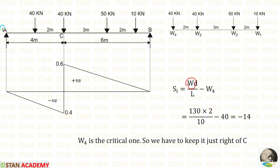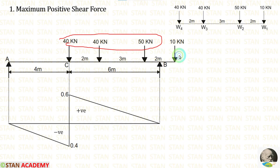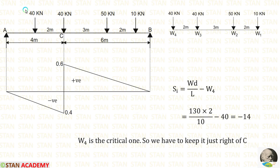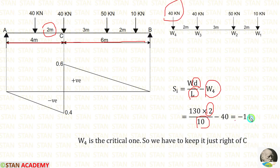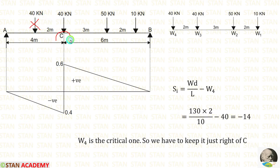W is the total load, and we have to be very careful when adding the total load. We should not add all of the loads. Before moving W4, we had only 3 loads in the beam — the 10 kN load is to the right of B and is not inside the beam, so we should not include it. Adding these 3 loads, we get 130. D is the distance we moved the load, which is 2 meter, and the total length L is 10 meter. W4 is equal to 40. Finally, we are getting minus 14, a negative value. That means when we keep this load to the left of C, the maximum positive shear force decreases, so we should not keep this load to the left of C.